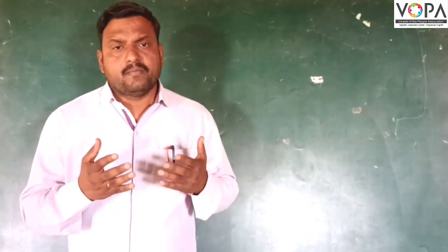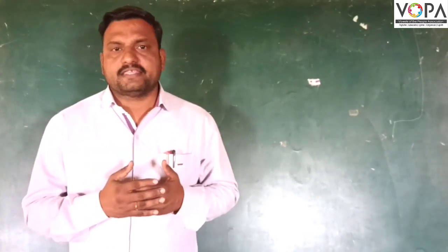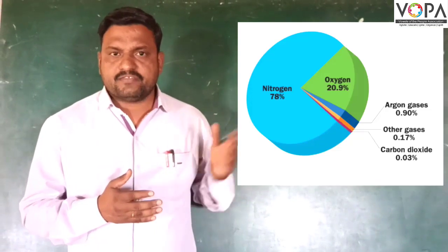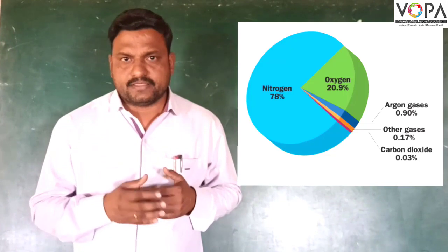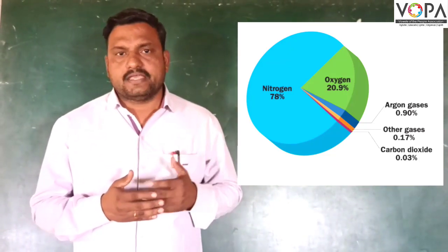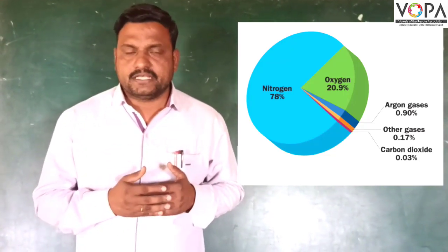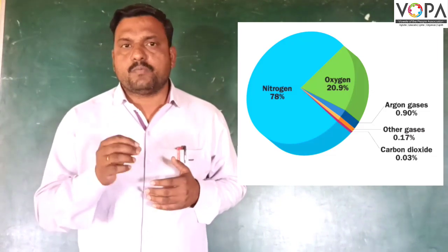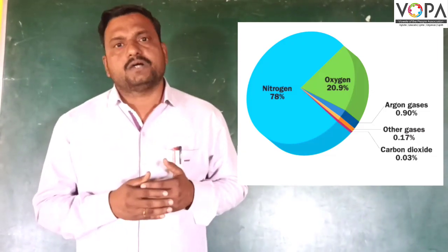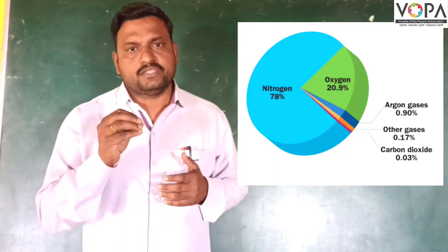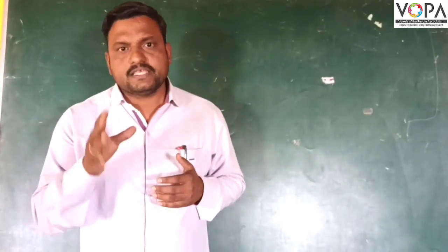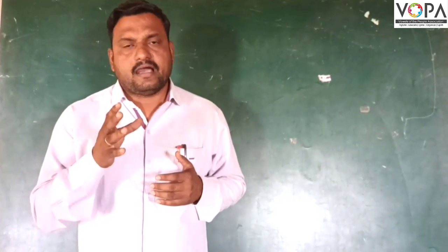Let's study more about the proportion of gases in the air. As the figure shows clearly, nitrogen is 78%, oxygen is near about 21%, argon is 0.90%, other gases are 0.17%, and carbon dioxide is 0.03%. All these gases in the air are very useful to us. Let's see one by one the use of all these gases.